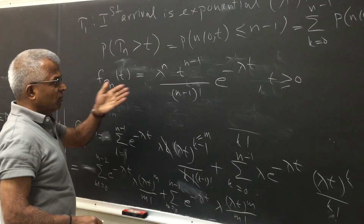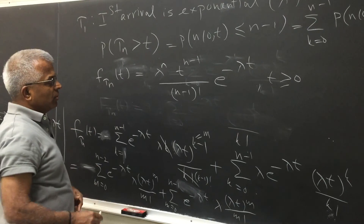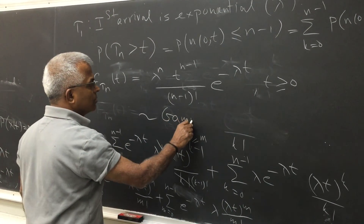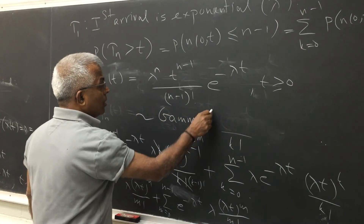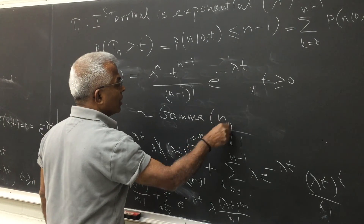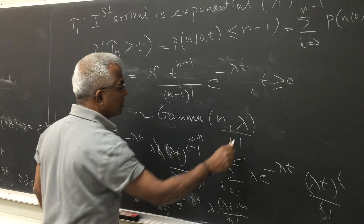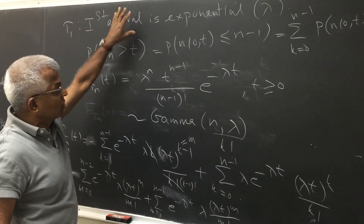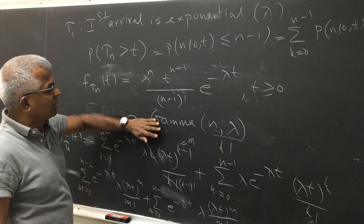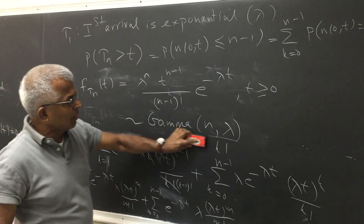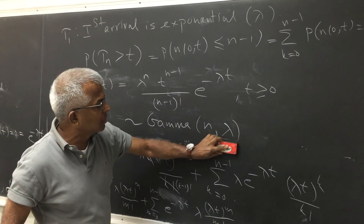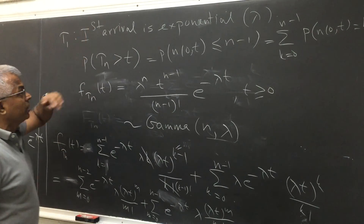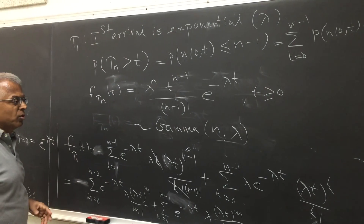Those familiar with this will recognize this as a gamma random variable with parameters n and λ. The first arrival is a special case of this, since gamma with n equals one reduces to the exponential.